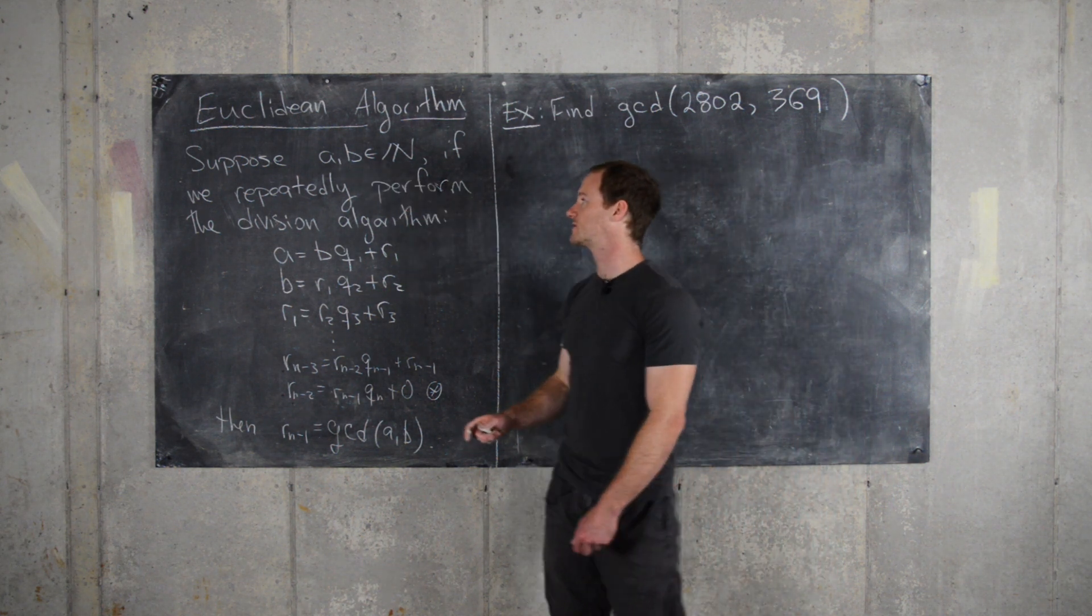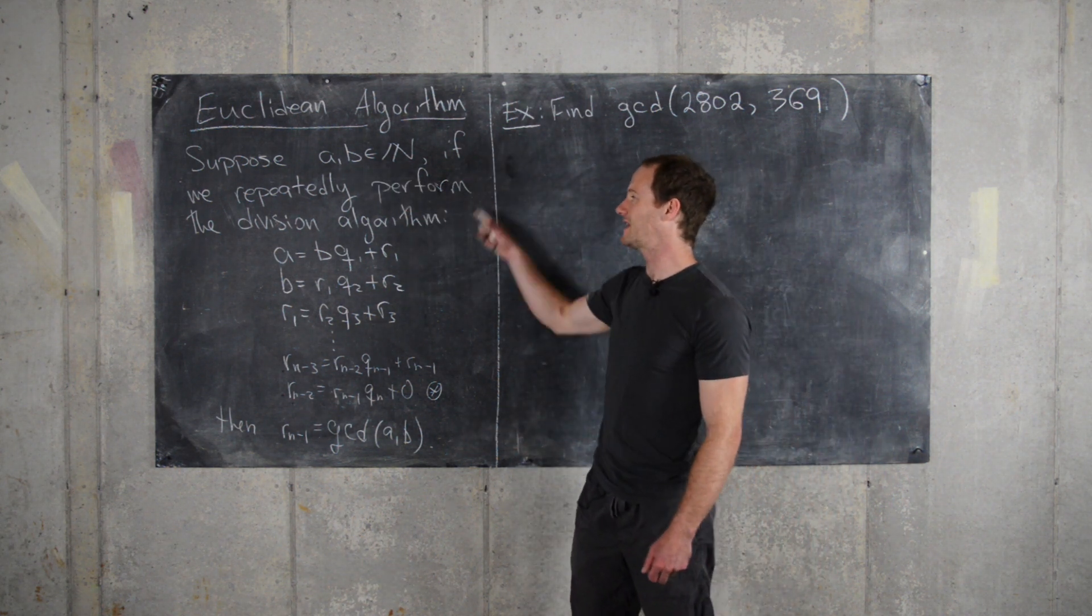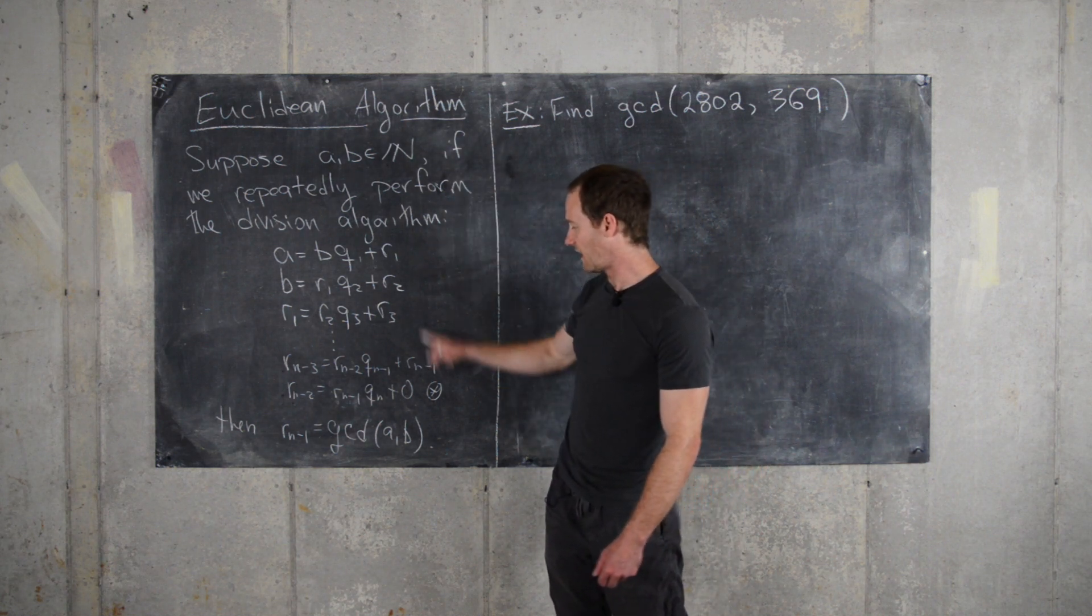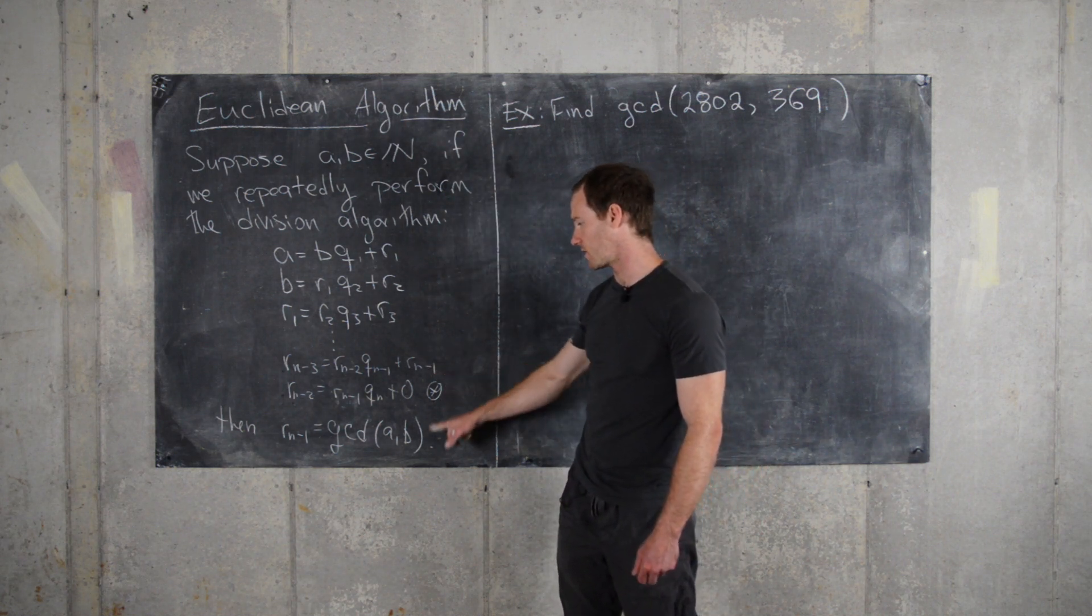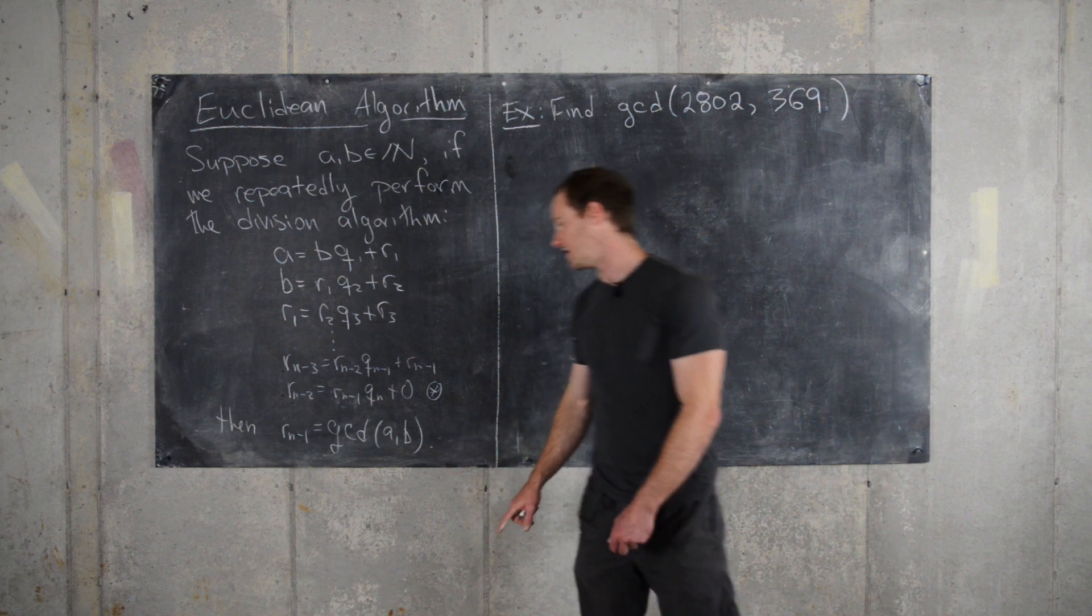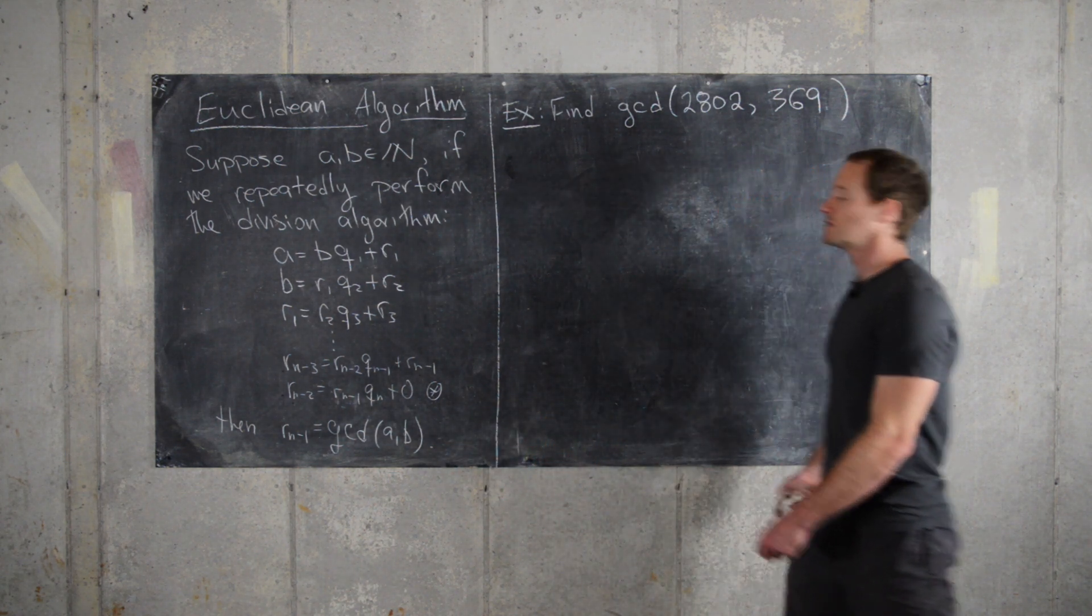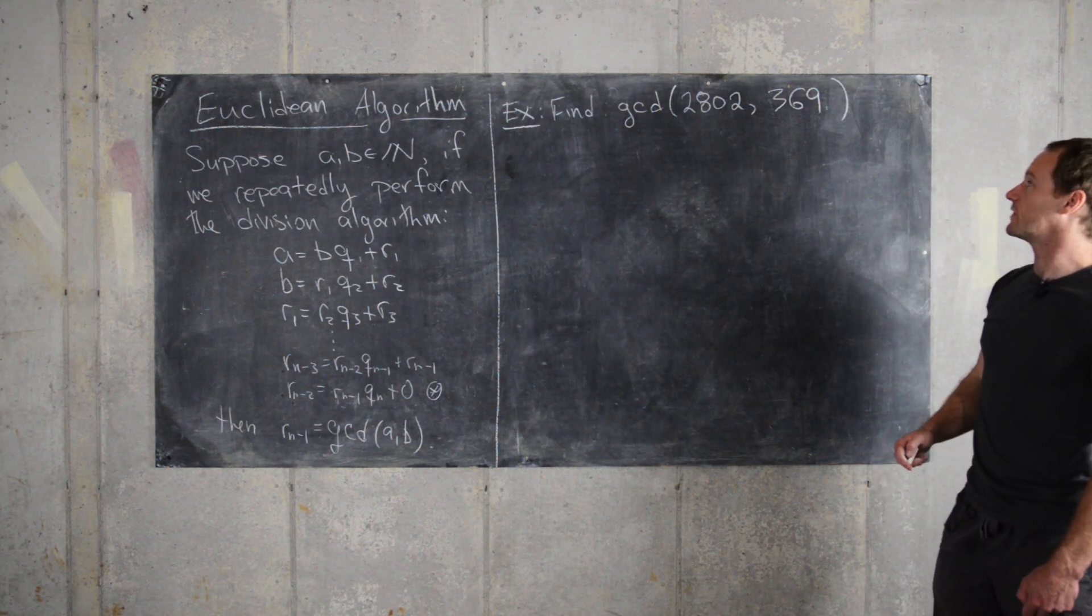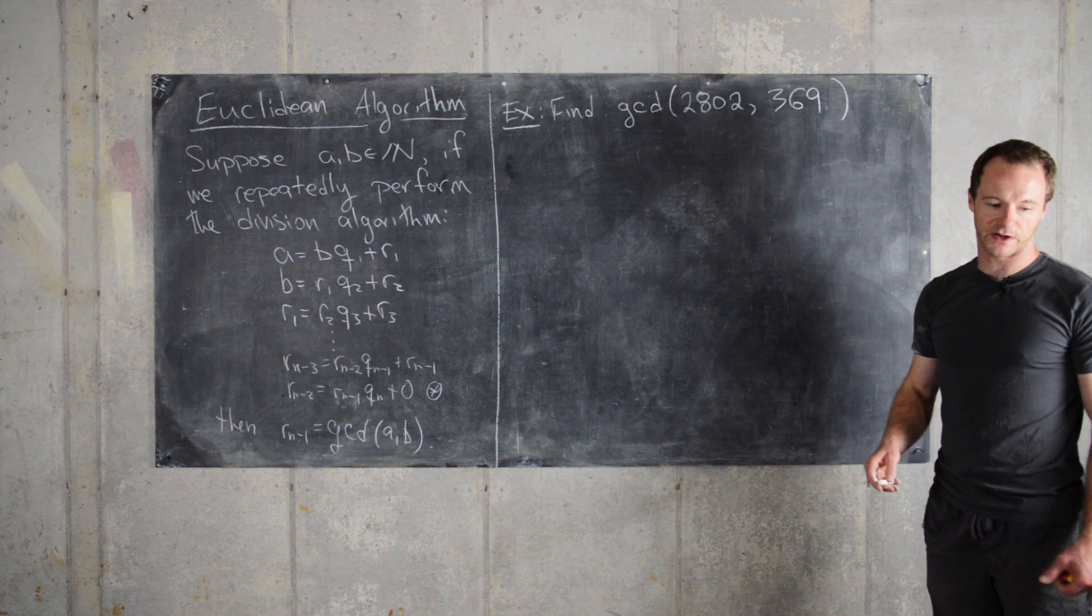Suppose we have two natural numbers. If we repeatedly perform the division algorithm, then the last non-zero remainder will be the GCD of the two numbers that we started with. So let's do this example with the numbers 2,802 and 369 and see what we get.